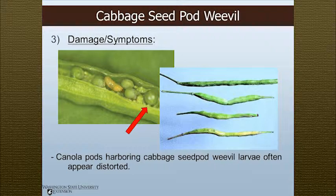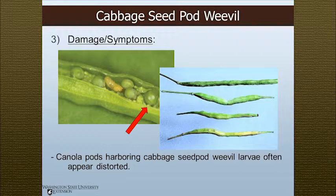Damage symptoms: when these guys are in your pods feeding on the seeds, oftentimes you will also have undamaged seeds as well. Basically, you will get a distorted appearance of the pod — here's one that's nice and straight, but the pod on the bottom has a weevil inside, so you get pods that are misshapen and bent. That's a classic example of cabbage seed pod weevil.